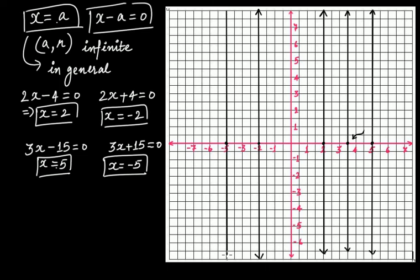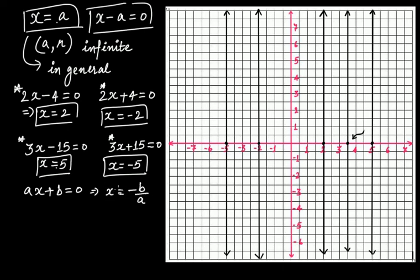If you notice, all these lines are parallel to the y-axis. So in general, as we have seen in these four examples, if your equation is of the form Ax + B = 0 and you have to plot the graph for this equation in one variable, you simply write it as x = −B/A. Your line will pass through that particular point on the x-axis.